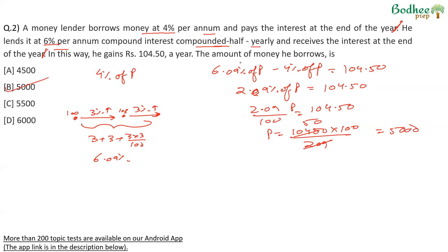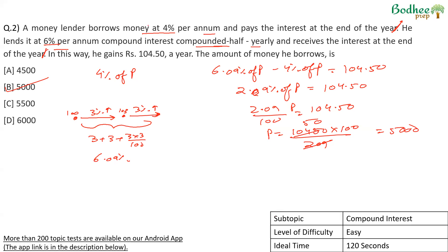Again, a basic concept of compound interest is used here — finding the effective rate. Once that's done, we write one equation and calculate the percentage. Therefore it's an easy question. The attempt time might be a little higher, maybe about two minutes, but it's definitely a question that can be attempted in the exam.